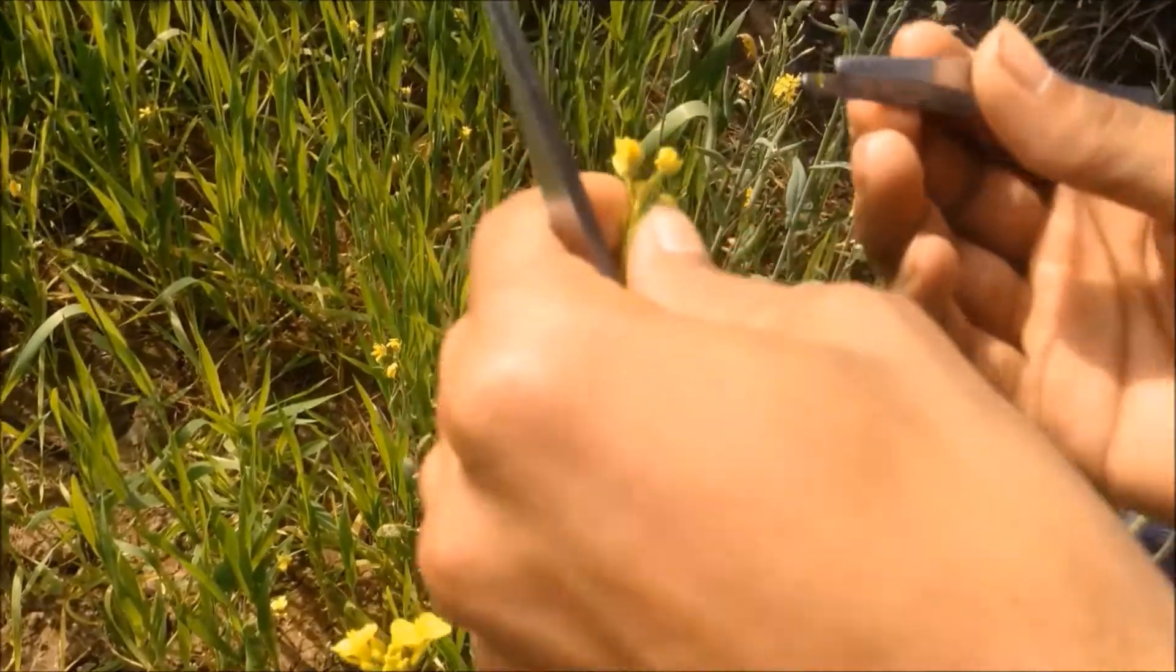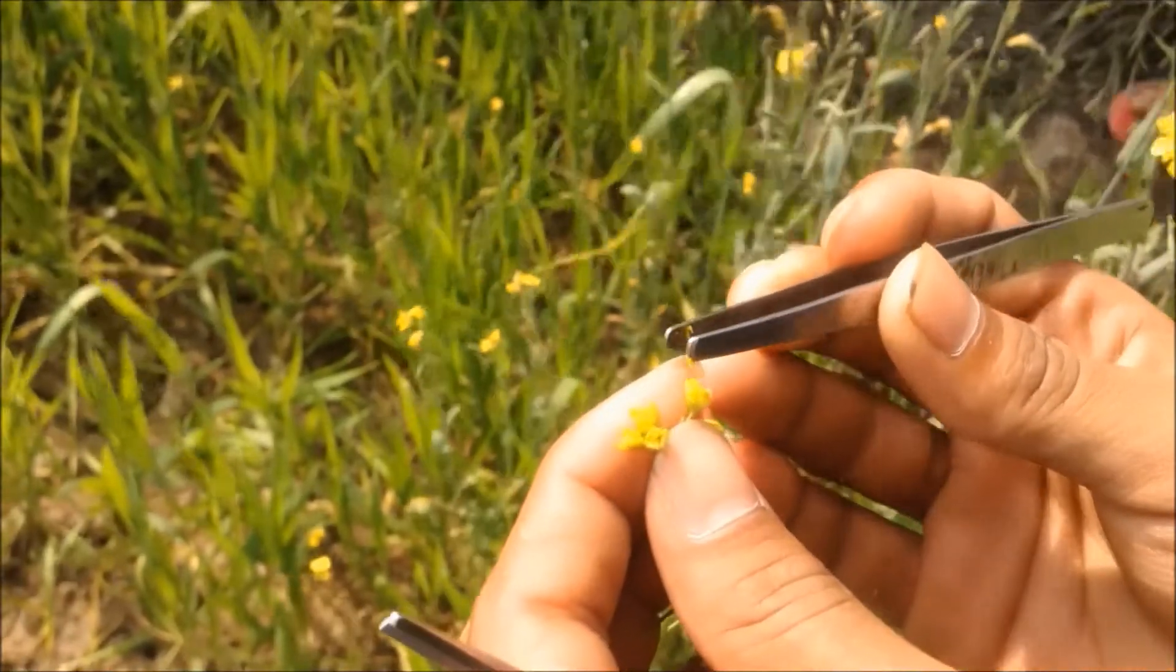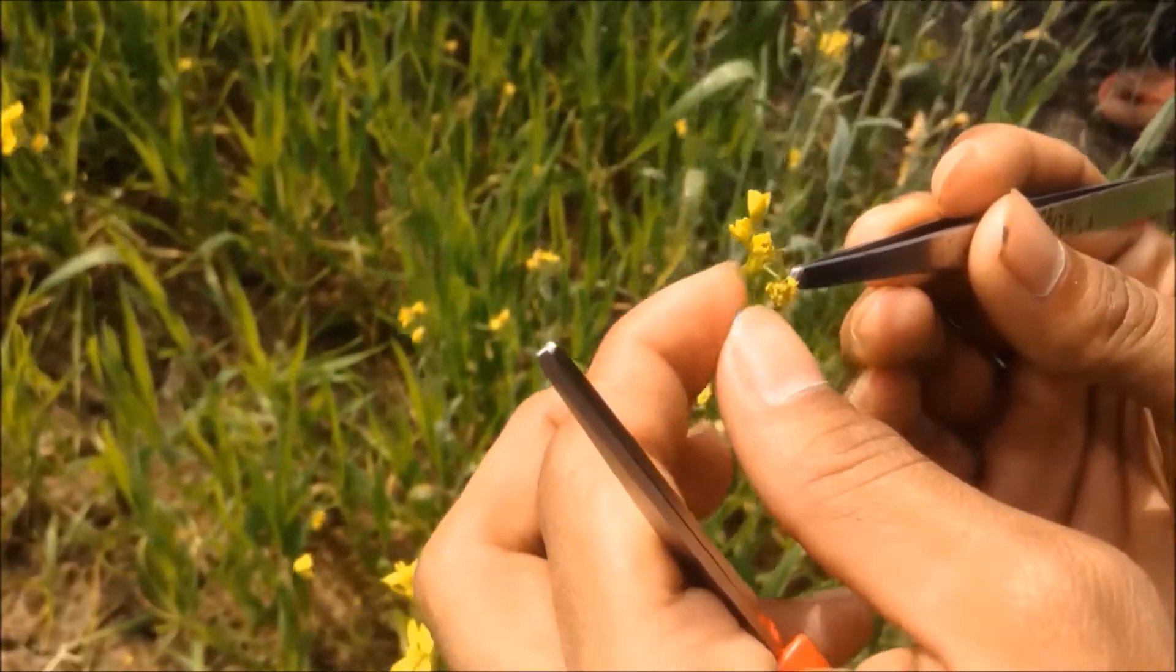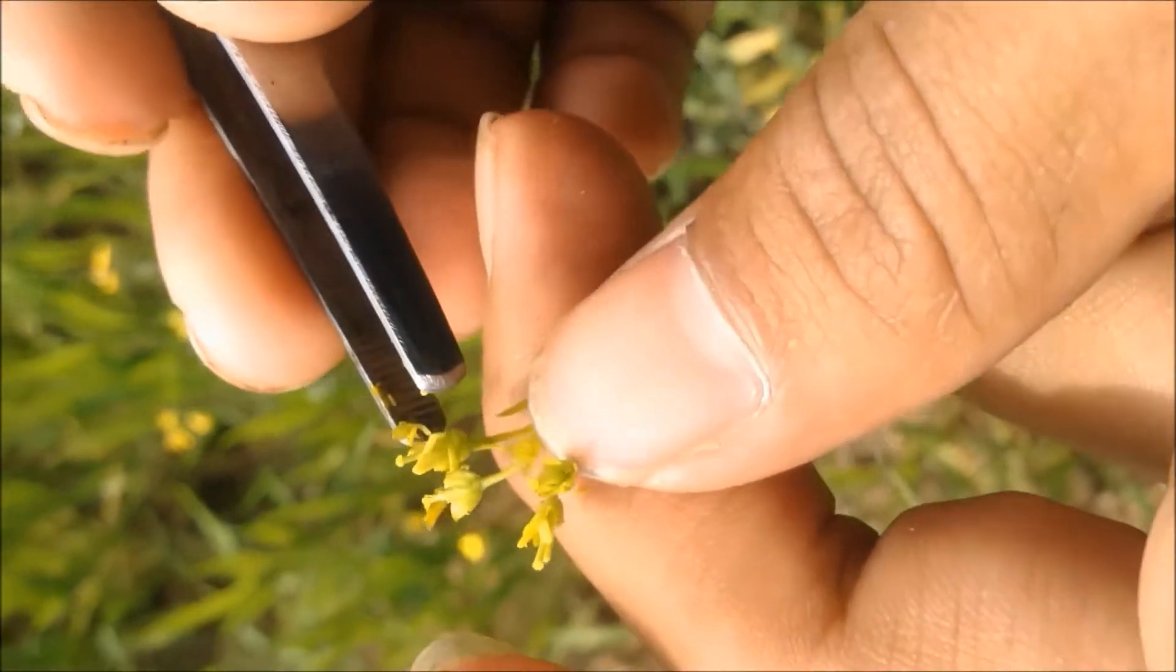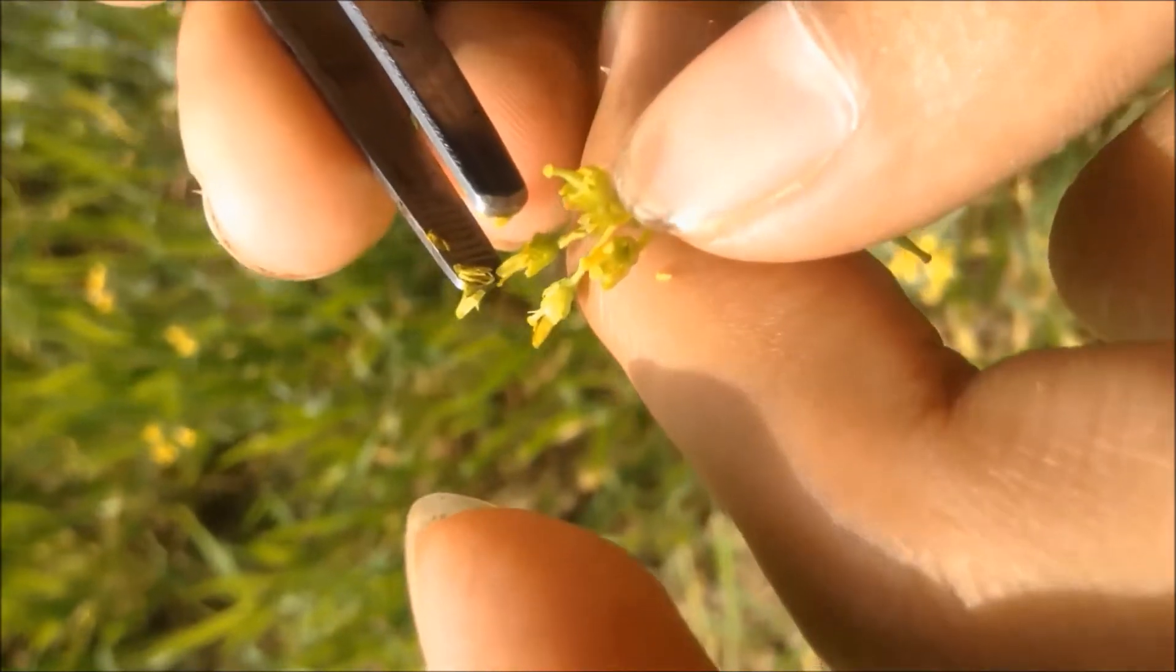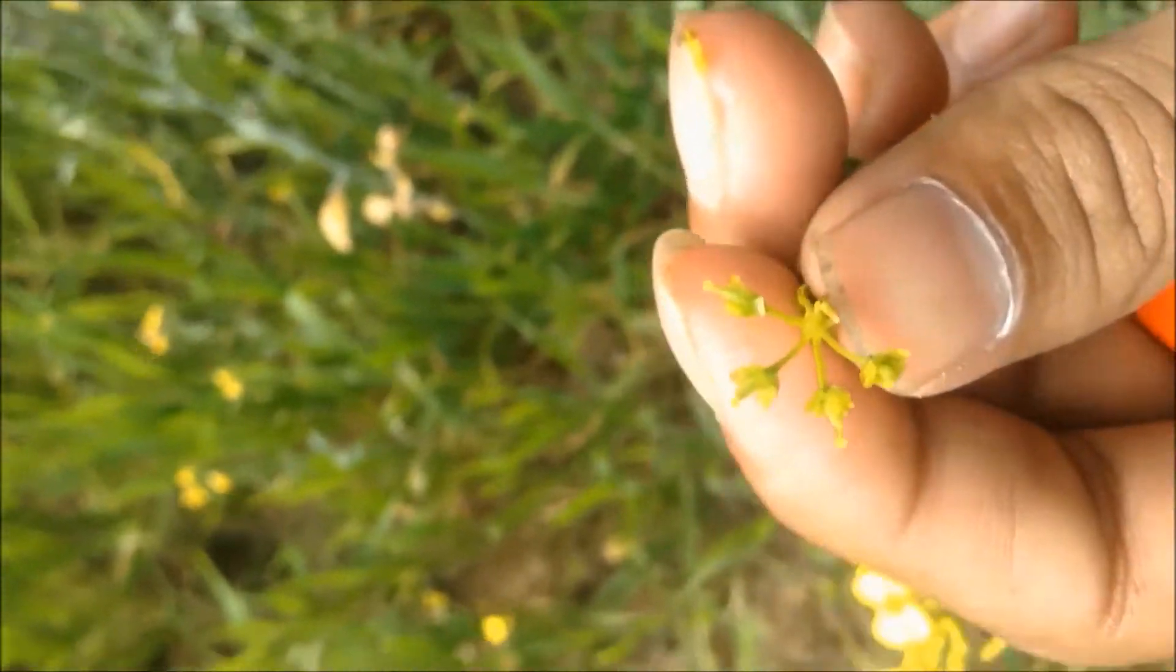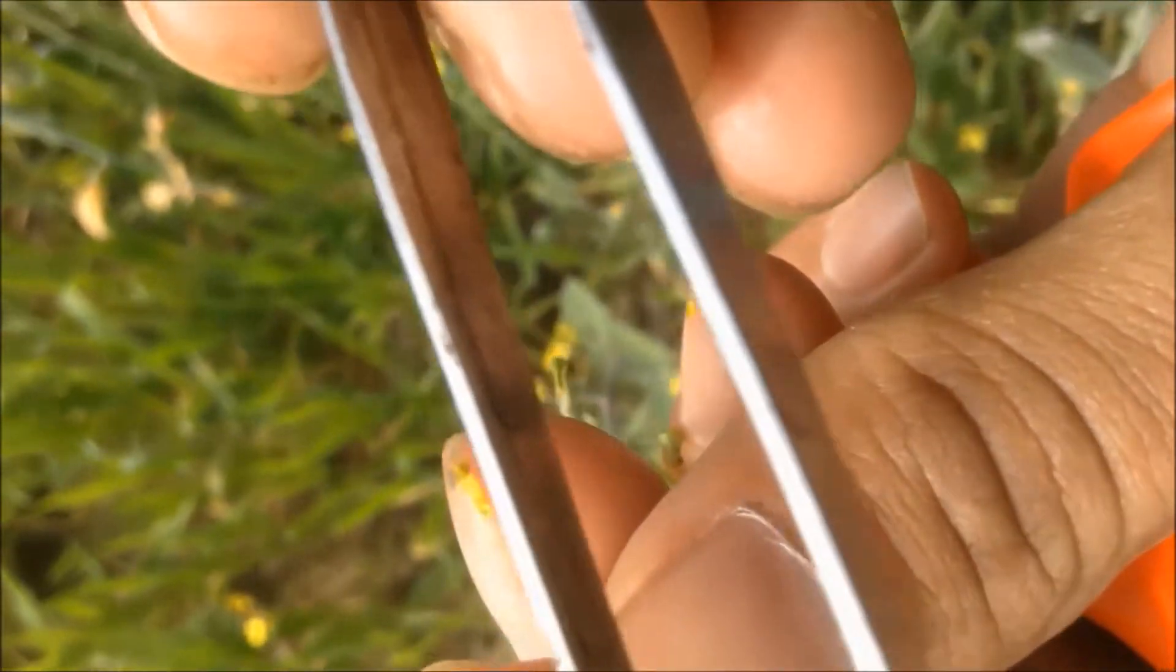Next I remove all the petals and stamens without injuring the stigma with the help of forceps. We have to be very much careful during this time. You can also see in the screen. Now we have five buds ready for the pollination.